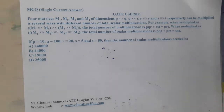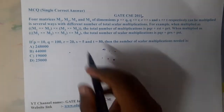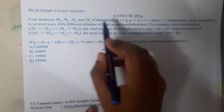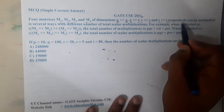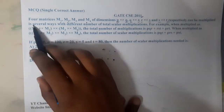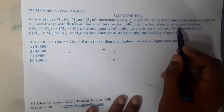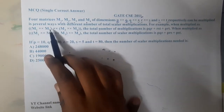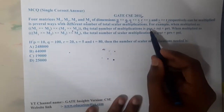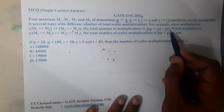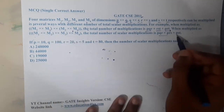Hello guys, we are back with our next lecture. This question belongs to GATE CSE 2011. There are four different matrices M1, M2, M3, and M4 of dimensions p×q, q×r, r×s, and s×t respectively. They can be multiplied in several ways with a different number of scalar multiplications. For example, when multiplications are done as M1×M2×M3×M4, the total number of multiplications is p×q×r + r×s×t + p×r×t.